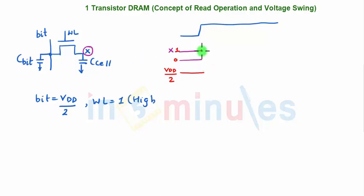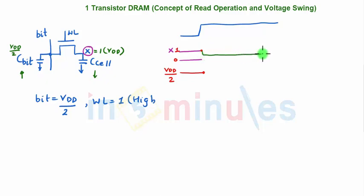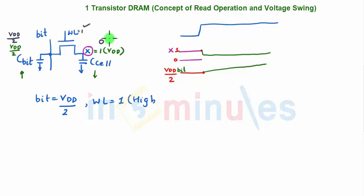When the word line goes high, let's first consider X was 1 (VDD). The bit line was at VDD/2 and X is VDD, so due to charge sharing, X will go down by some value and the bit line will go up by delta V. In the other case where X was 0: the bit line was still VDD/2. When the word line goes high, charge sharing occurs — X goes up and the bit line comes down.